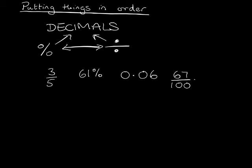Could we put all these into a decimal? You think we could? Let's have a go. Three-fifths — what we did was change that fraction into a percentage. What number did we need at the bottom of our fraction? A hundred. So could we change three-fifths to something over a hundred? How do you get from five to a hundred — how many times five makes a hundred? Twenty. Five times twenty is a hundred. What do you think you'd do with the three? Three times twenty is sixty.